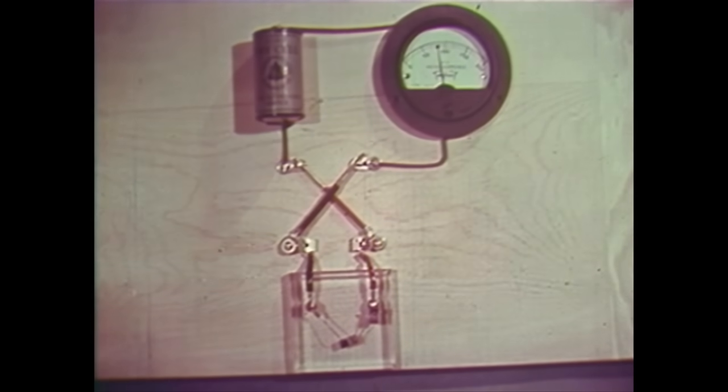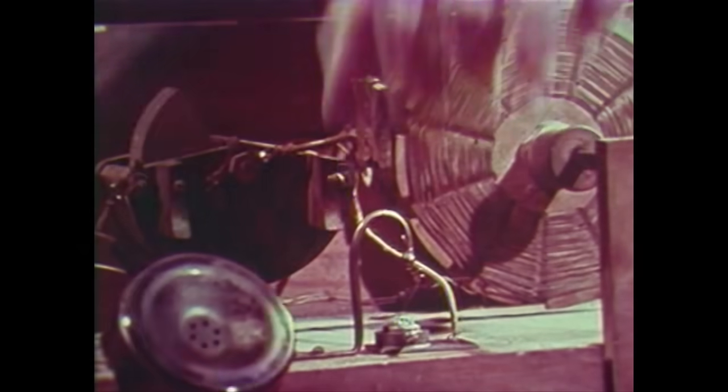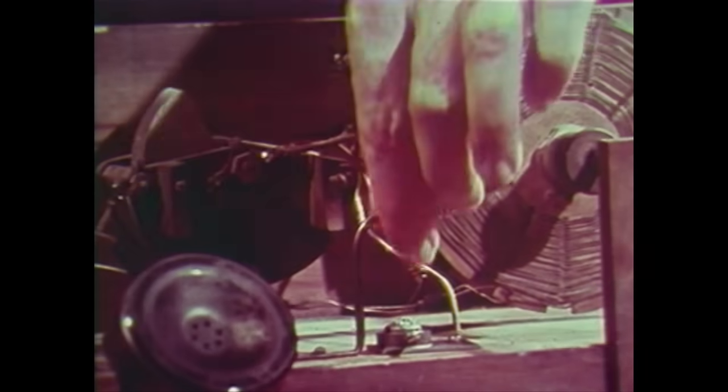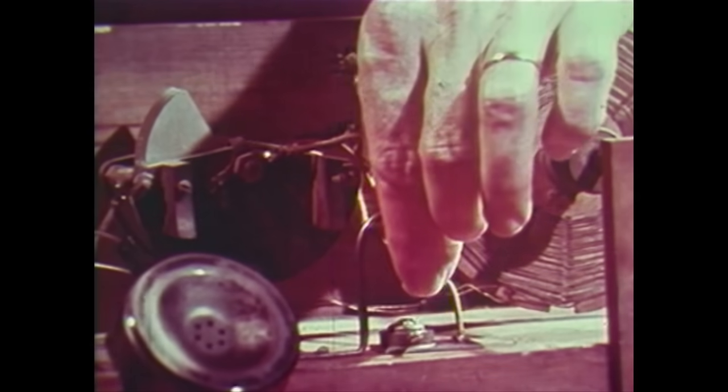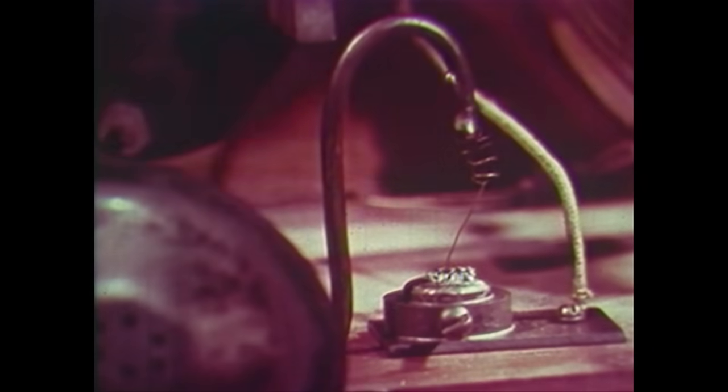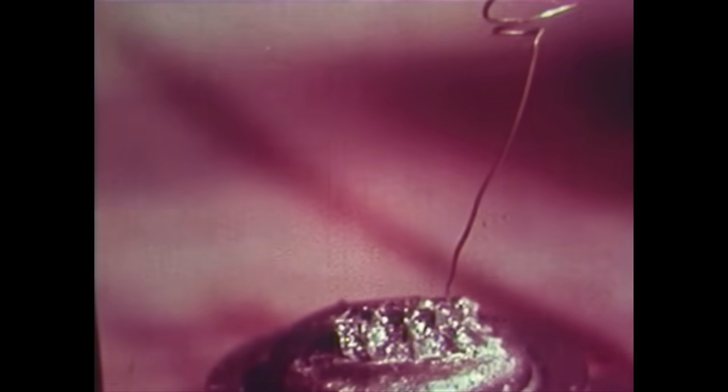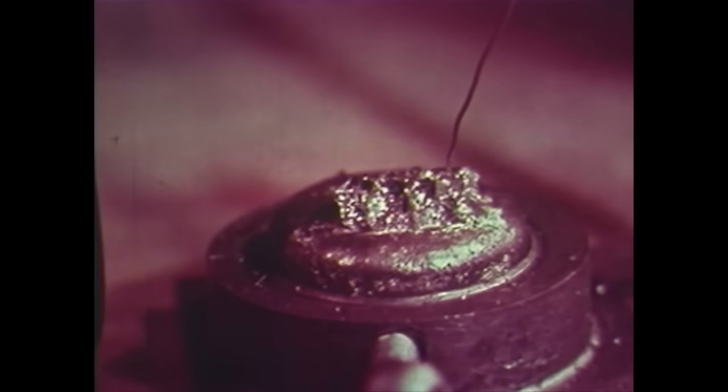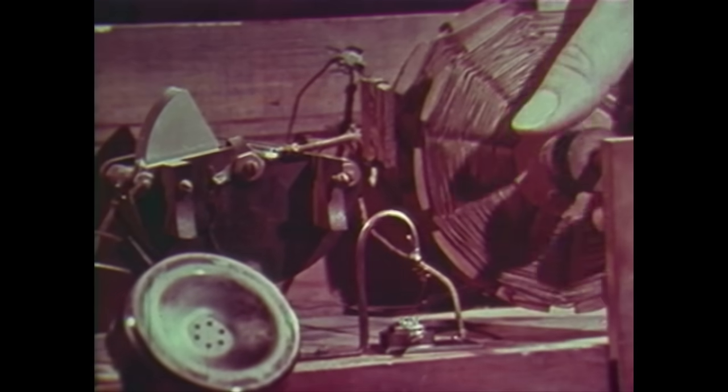This characteristic of semiconductors was exploited in the early days of radio to make excellent radio detectors using lead sulfide or silicon. When these semiconductors were touched with a fine wire called a cat's whisker, they changed the incoming high-frequency signal to a low-frequency signal, which could then be heard with earphones.